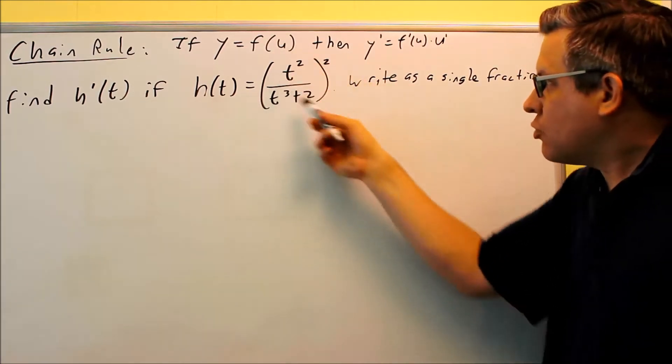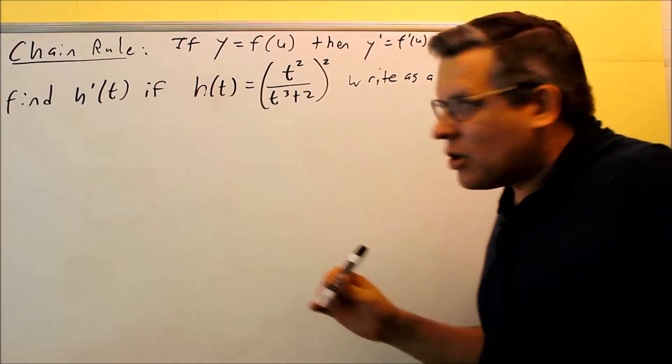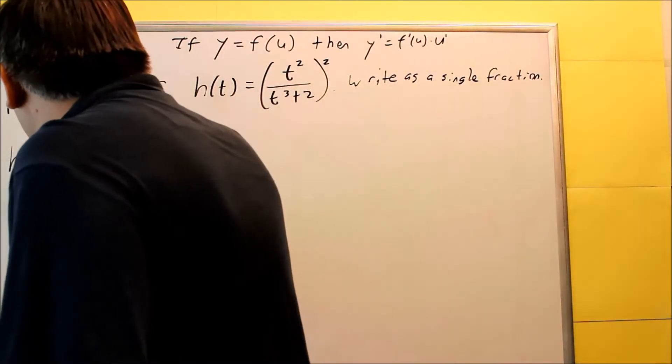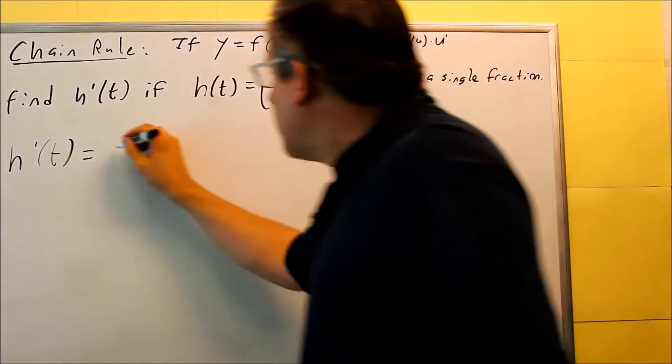When we get to that point where we're taking the derivative of the inside, we'll have to do a quotient rule for that one. Okay, so let's get started. So we want to do h prime of t. Okay, start with the outside function. The 2 is going to come down.